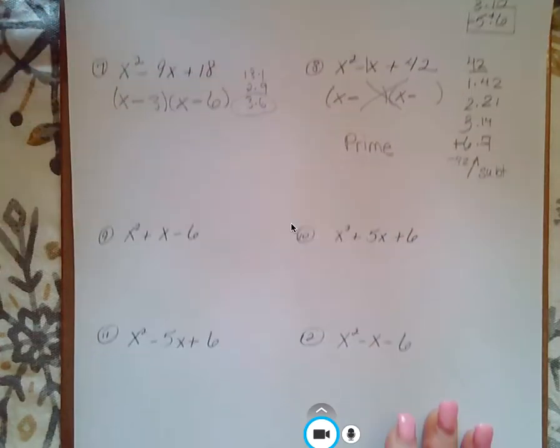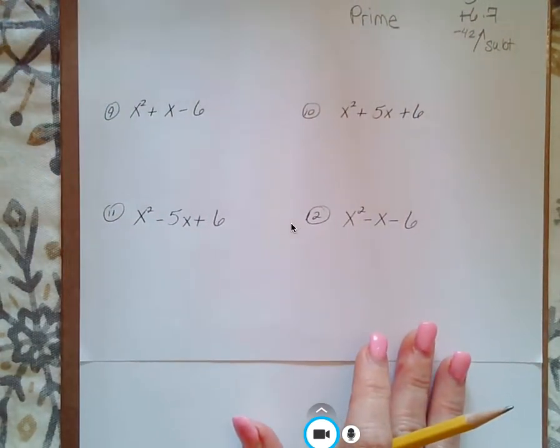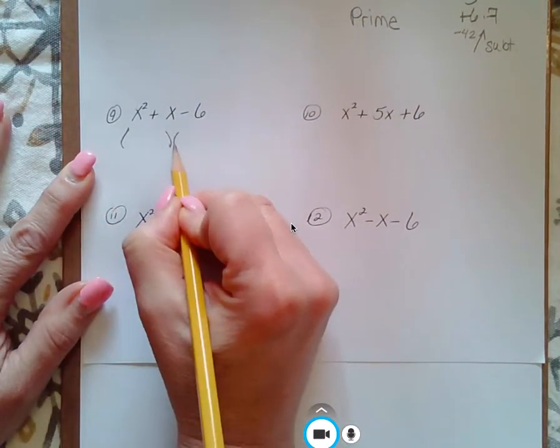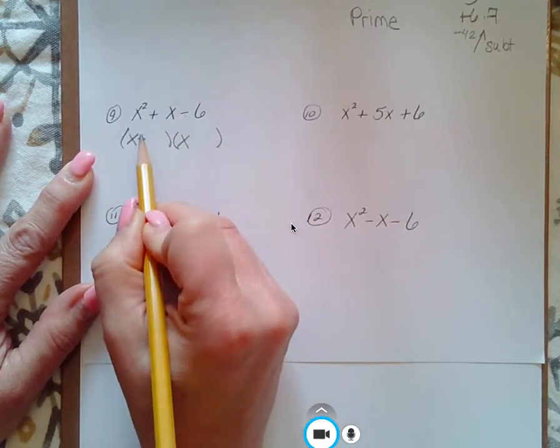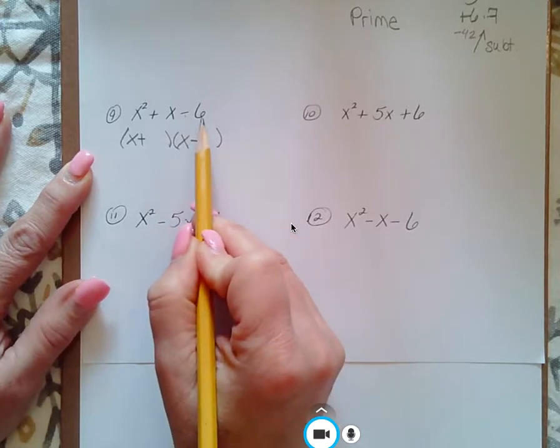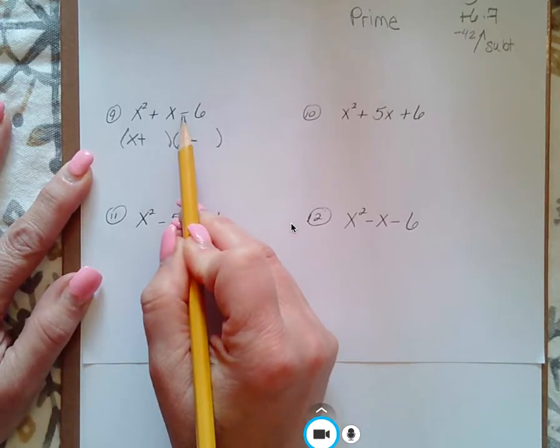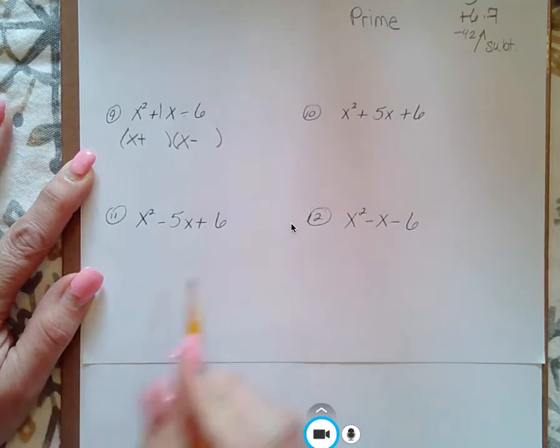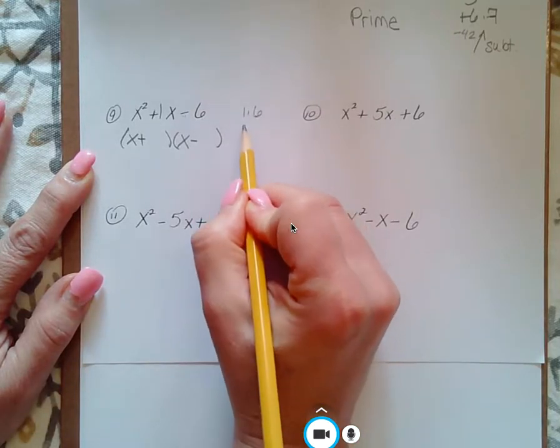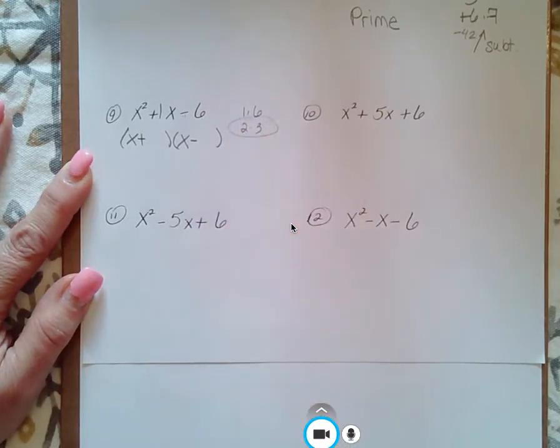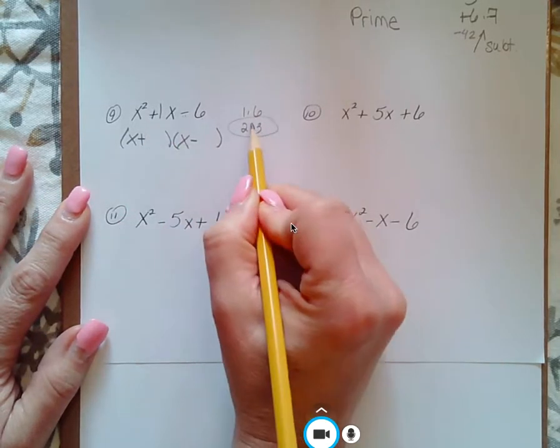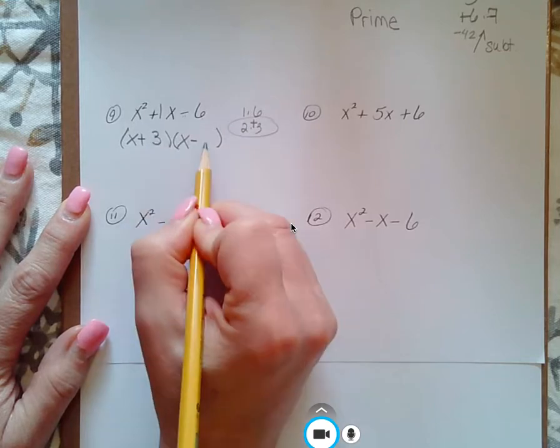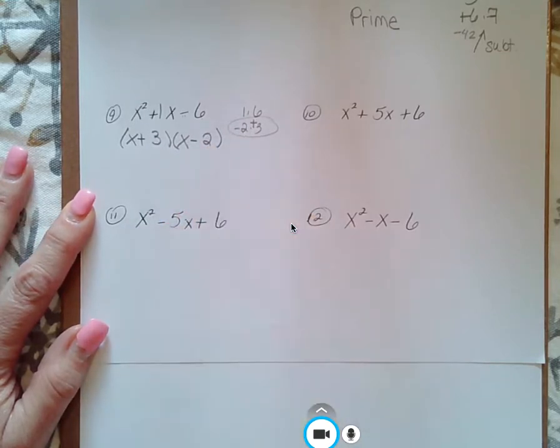Okay, so let's check out these guys down the bottom. Two sets of parentheses, x in the beginning of each. Multiplying to get a negative, one each sign. Multiply to 6, subtract to get 1. So that's 1 times 6, 2 times 3. Oh, there it is. That's how I can subtract and get 1. Since it's a positive 1, the plus goes with the larger number and then the minus with the smaller number.